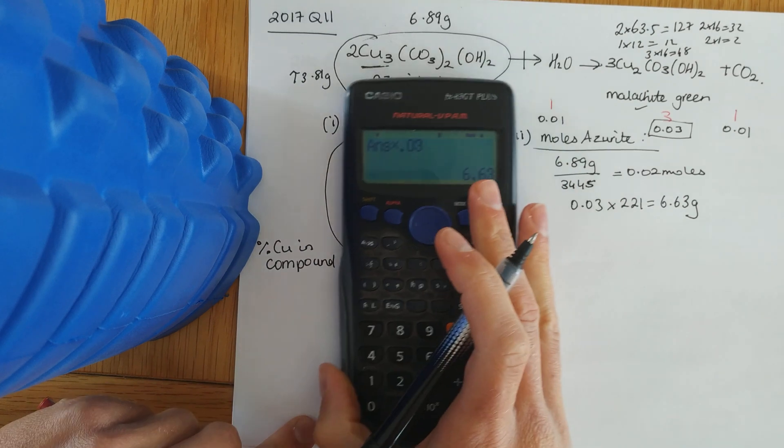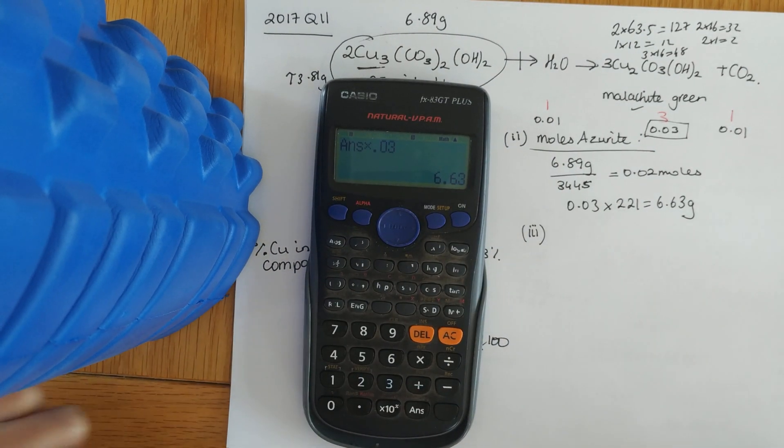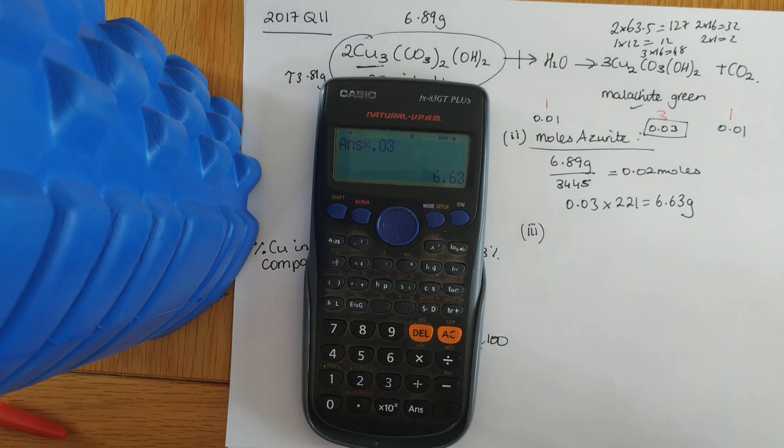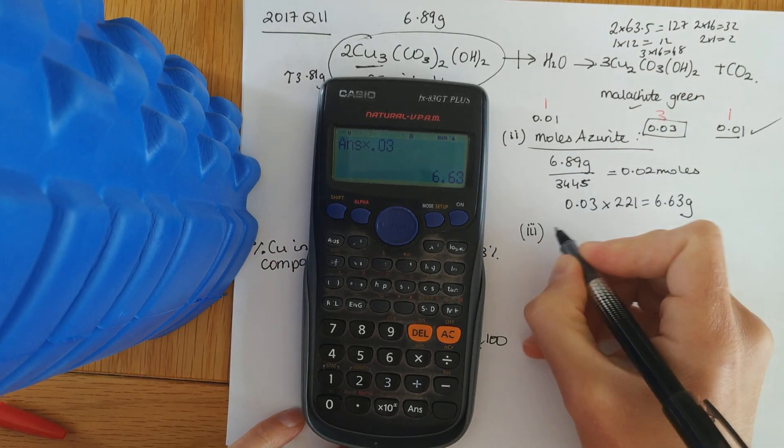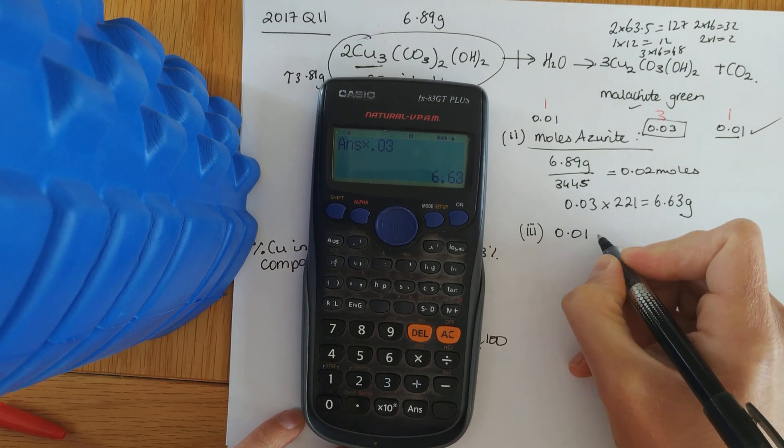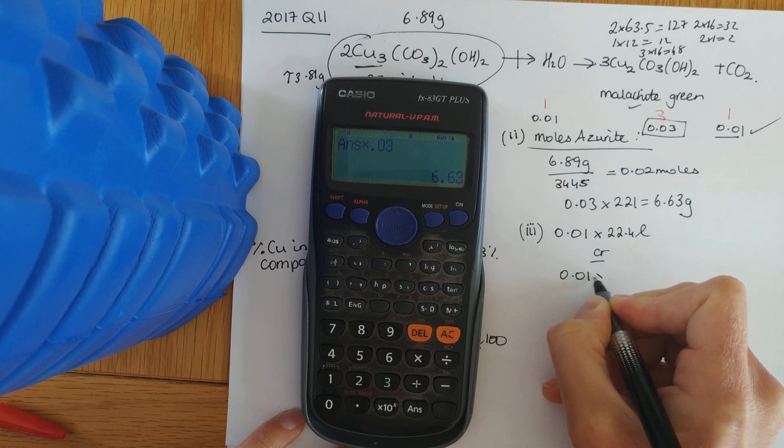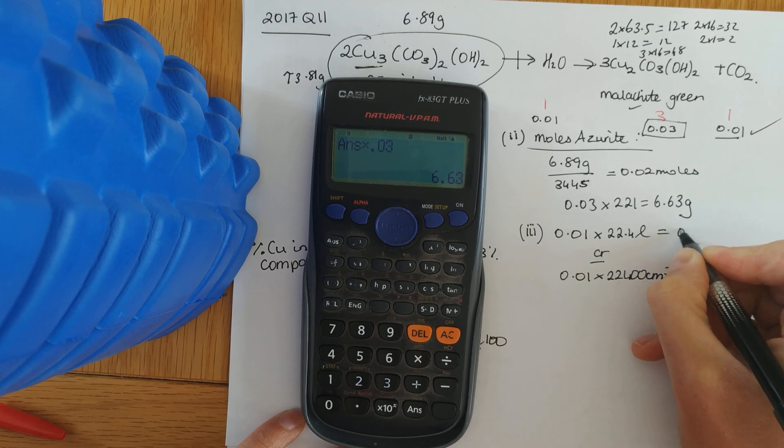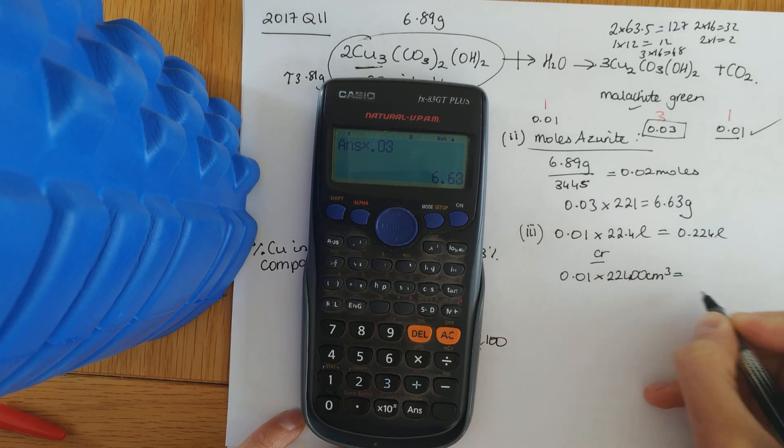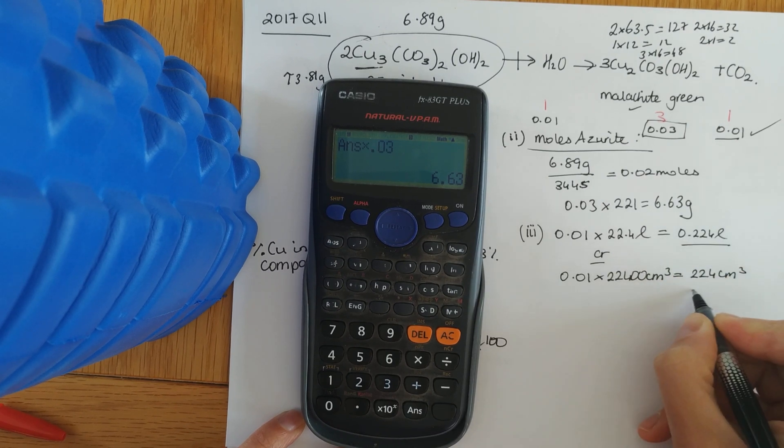Next one, what is the volume measured at STP? So there we can see the STP being mentioned. The leading search questions always will. What is the volume measured at STP of carbon dioxide that would be released? So, we've got the number of moles of carbon dioxide, 0.01. The volume, either multiply it by 22.4 liters or, if you like, by 22,400 centimeters cubed. Remember, at room temperature and pressure, it would be 24 liters. Throw it into your calculator then.